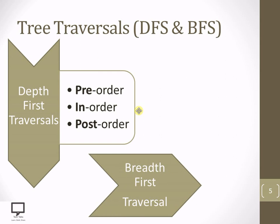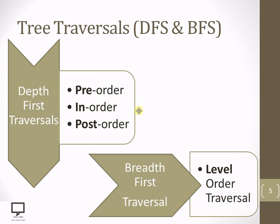The other technique is Breadth First Traversal, where it traverses with the help of levels, so it is also called level order traversal. According to the level of the tree, the tree will get traversed using the breadth first traversal technique. To know details about all these different traversals, I am providing a shortcut link in the right corner. You can go through that to know details about all these traversal techniques.